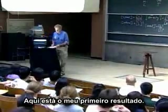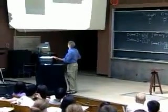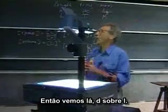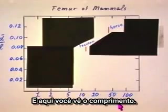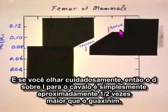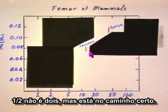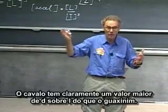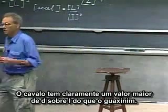Here is my first result. We see D over L on the vertical axis and the length on the horizontal axis. You see here the raccoon and you see the horse. If you look carefully, the D over L for the horse is only about one-and-a-half times larger than the raccoon. I wasn't too disappointed — one-and-a-half is not two, but it is in the right direction. The horse clearly has a larger value for D over L than the raccoon.